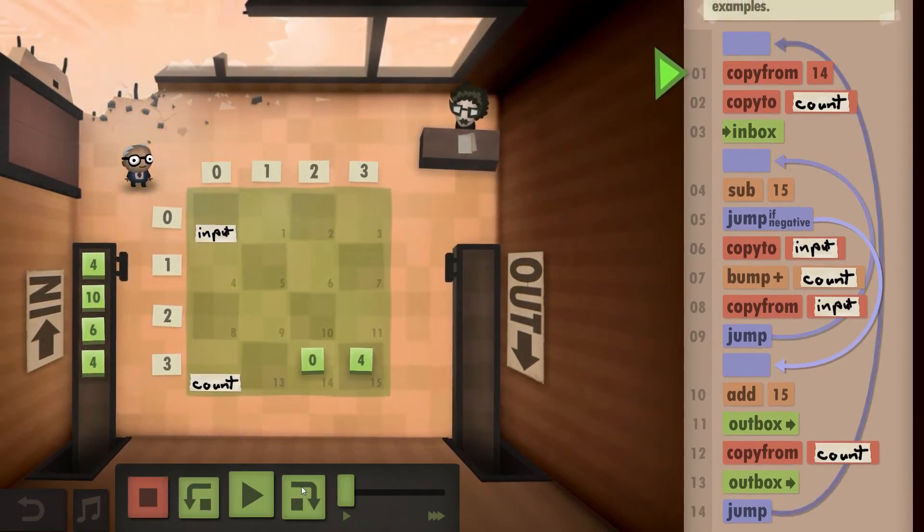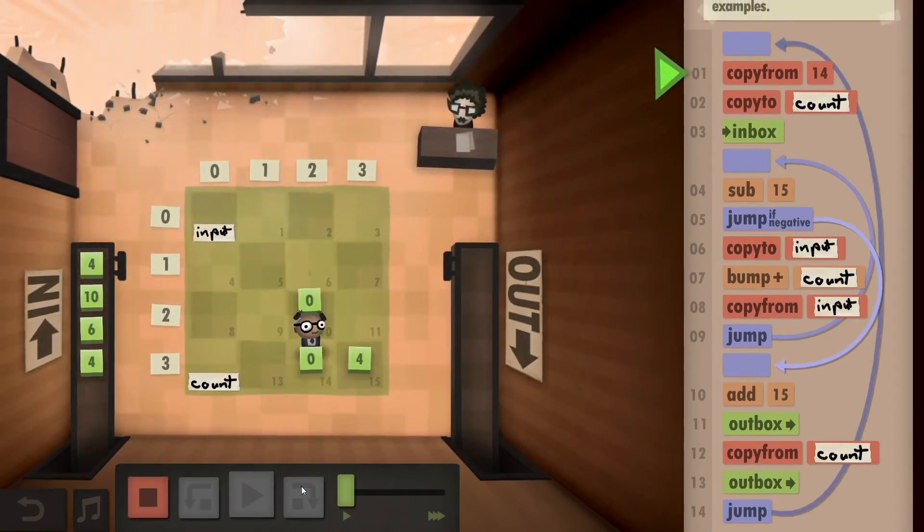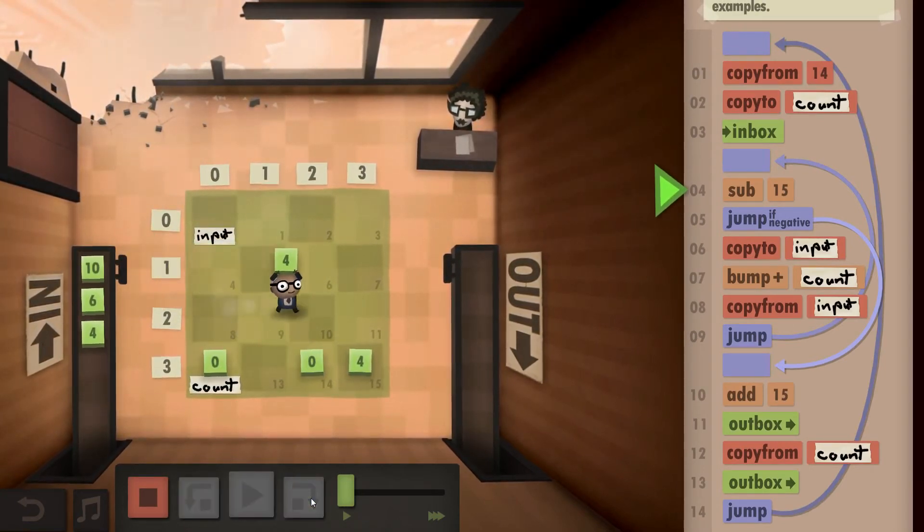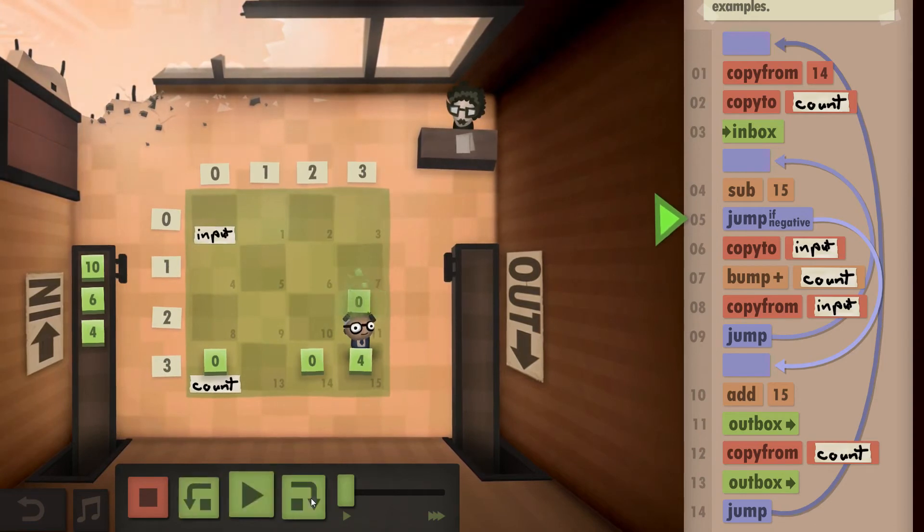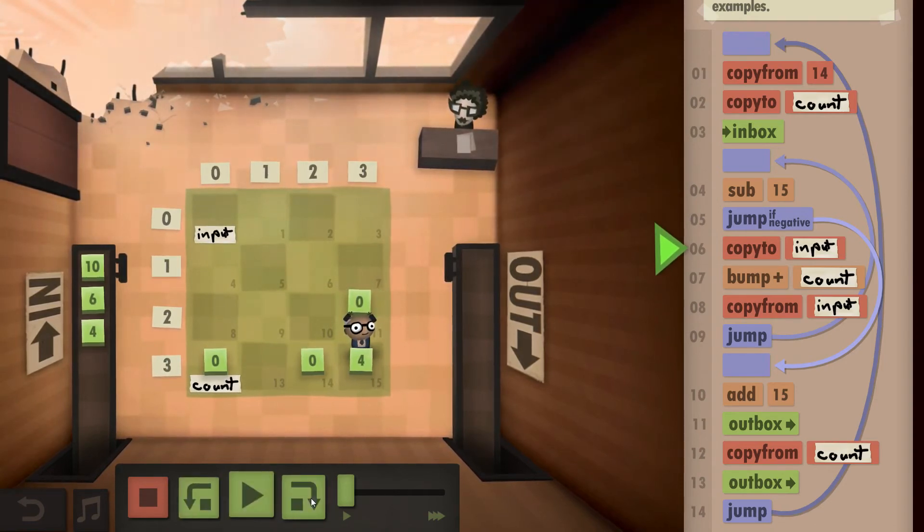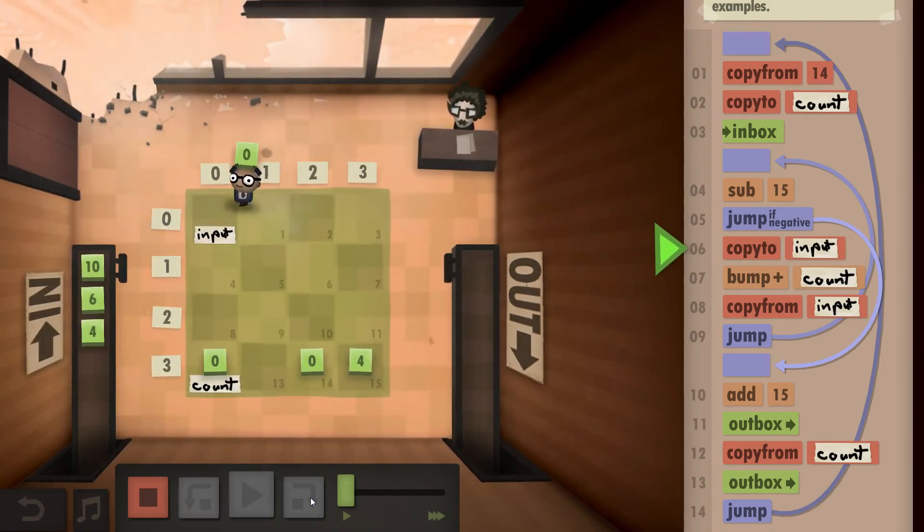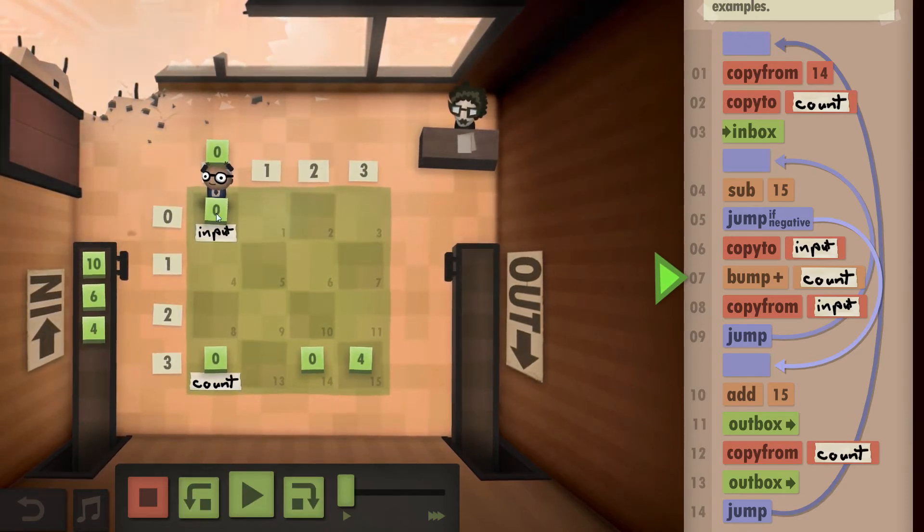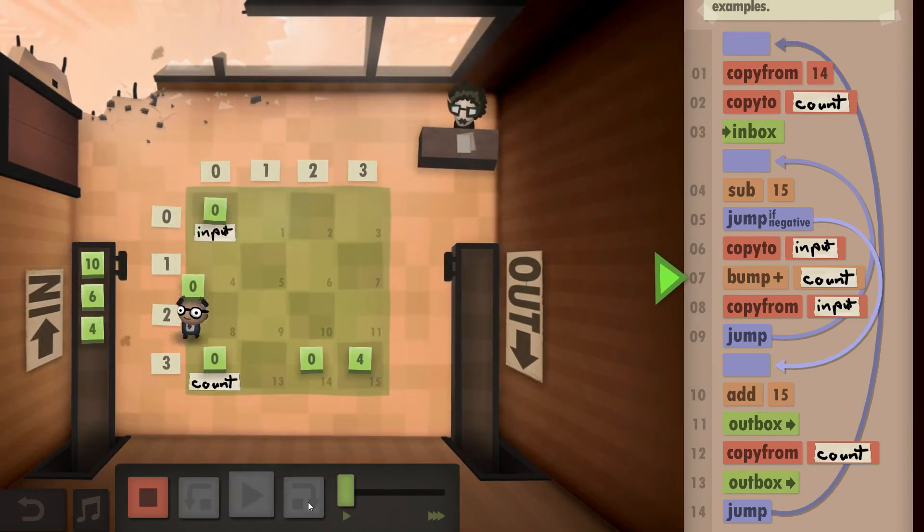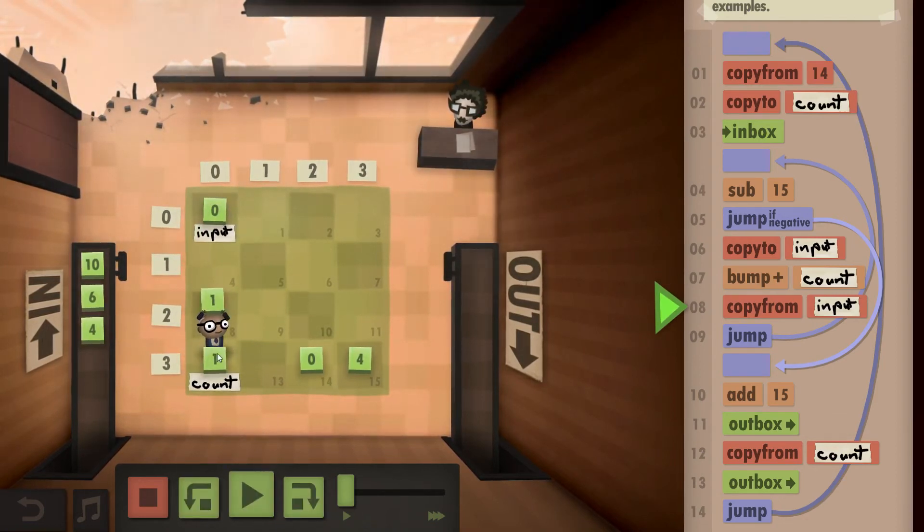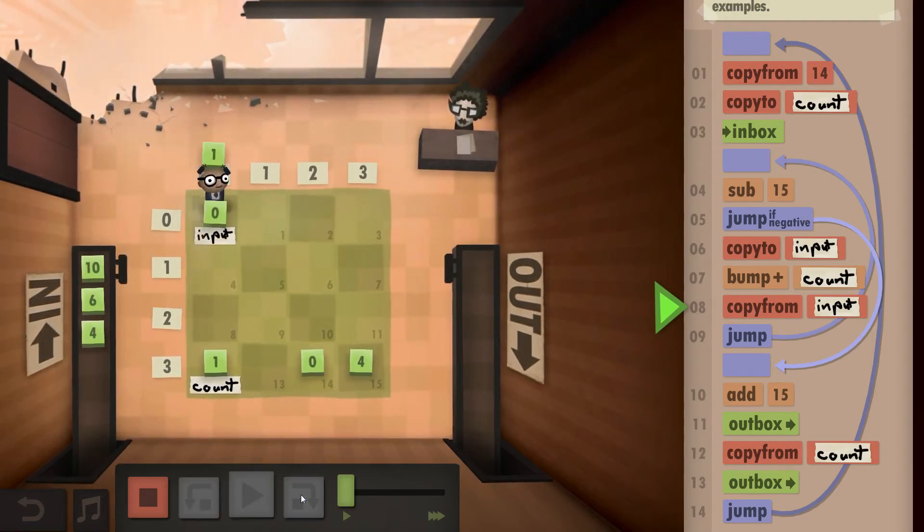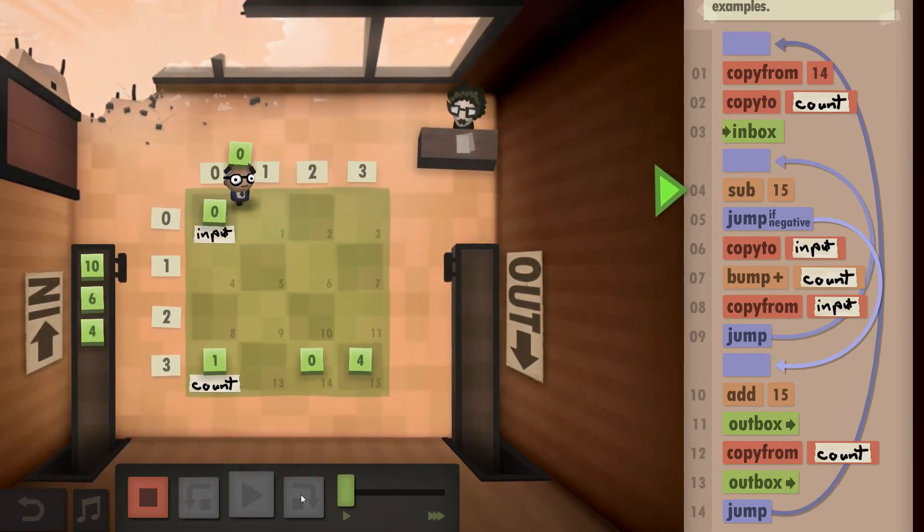So let's see how that works in more detail. We initialize our count with 0. We take the 4, subtract our 4. This is already 0, so we can copy to input, which is now our row number. And then we bump up our count, which is our column number. And then really we just output.